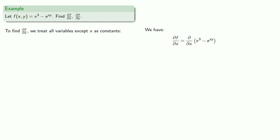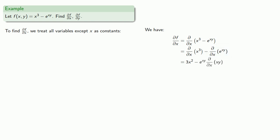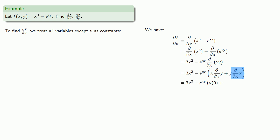This is a function minus another function, and the derivative of a difference is the difference of the derivatives. The derivative of x³ is 3x². For the derivative of e to the xy — that's the chain rule — the derivative is e to the xy times the derivative of the exponent xy. Since xy is a product, we apply the product rule: first times derivative of the second, plus second times derivative of the first. Remember we're treating all variables except x as a constant, so the derivative of y is 0, and the derivative of x with respect to x is 1. After algebraic simplification we get our answer.